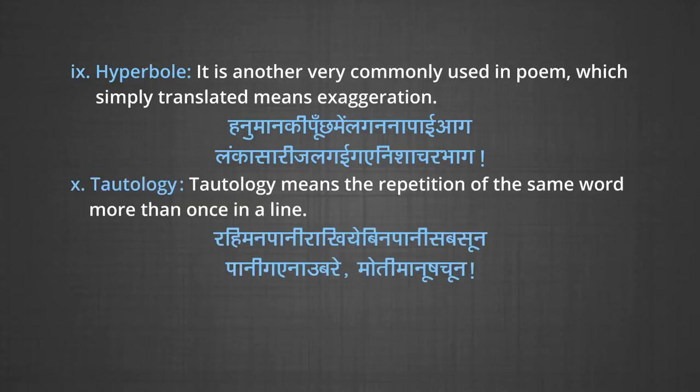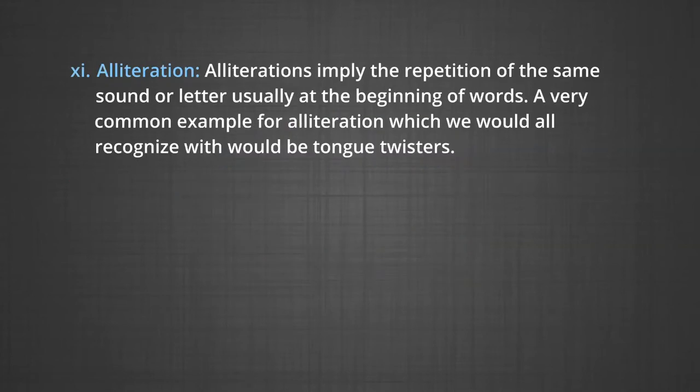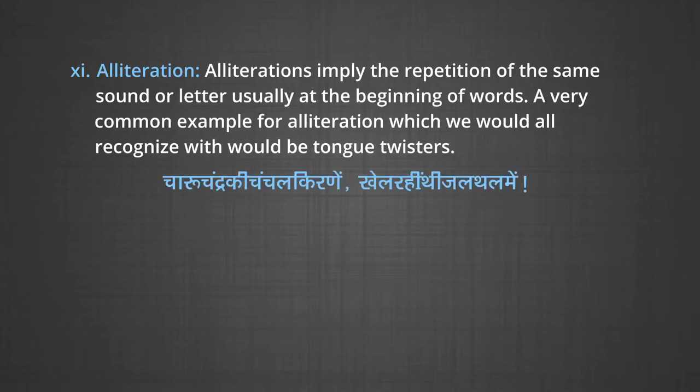Then tautology — tautology means the repetition of the same word more than once in a line. For example: 'Rahim paani rahiye, bin paani sab soon, paani gaye na ubrey, moti manush choon.' Alliteration — alliteration implies the repetition of the same sound or letter, usually at the beginning of a word. A very common example of alliteration which we would all recognize would be tongue twisters: 'Chaaru chandra ki chanchal kirne khel rahi thi jal-thal mein.'